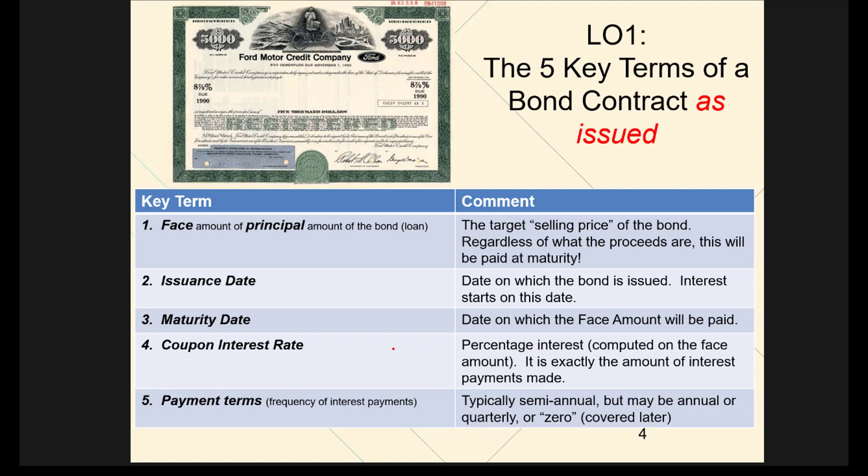The third provision is the maturity date. The importance of the maturity date is that on that date you get all your money back. So if you're the holder of the bond, on the maturity date you will receive a check — in this example, for $5,000.